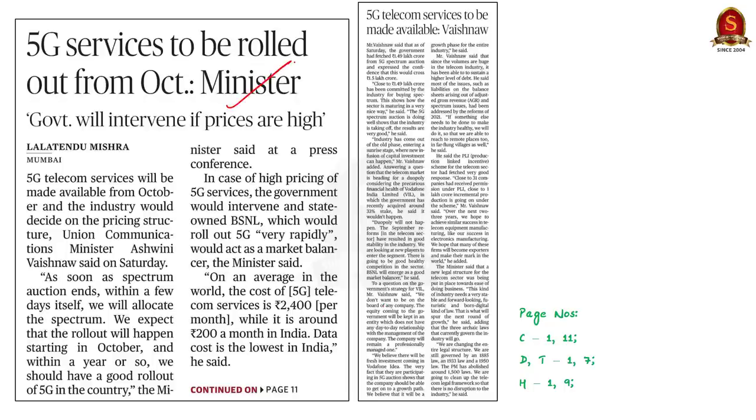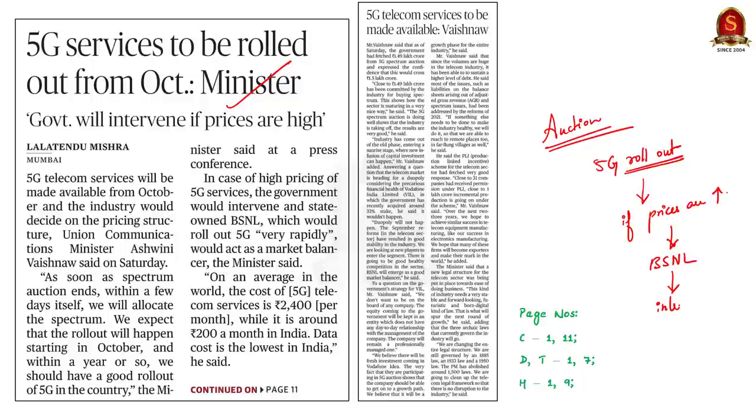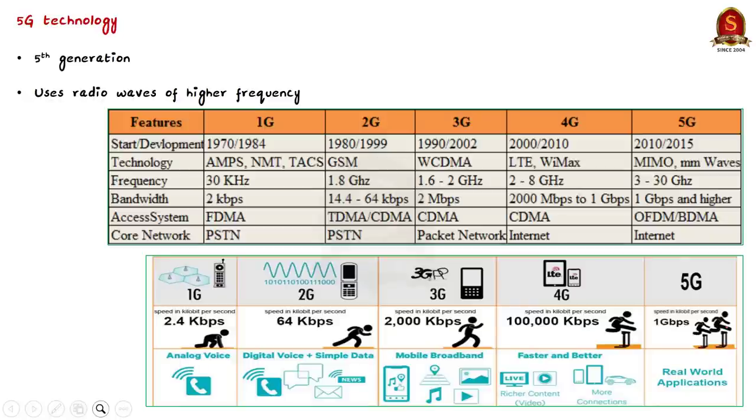See this news article here. It is about 5G rollout. We know that 5G spectrum auction is going on. In this context, the Union Minister for Communications said that once the spectrum auction is over, the 5G rollout will start soon. And finally, he also said that if in case the 5G prices are high, then the state-owned telecom operator that is the BSNL will intervene and act as a market balancer. As a part of this discussion, let us see some points about 5G technology from Prelims perspective. First of all, we will see what 5G is.